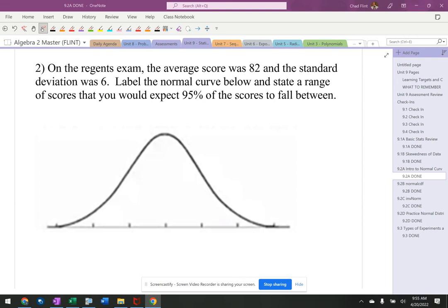So Regents exam, average score is 82, standard deviation is 6, label it, where's 95% going to fall? Well, 82 goes in the middle.